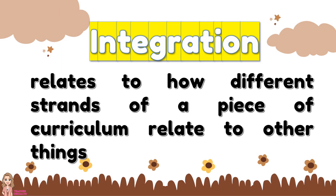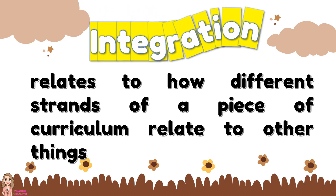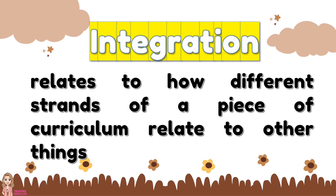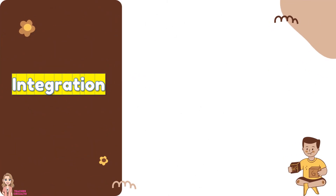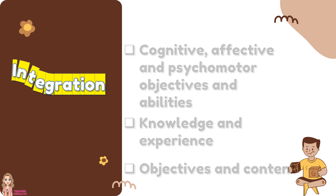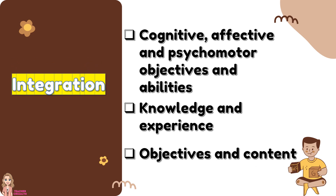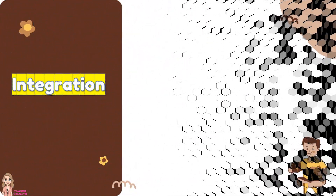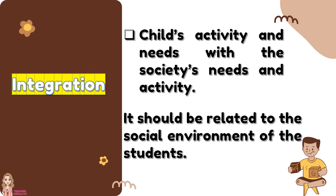Next is the integration. It relates to how different strands of a piece of curriculum relate to other things. We should integrate the following: cognitive, affective, and psychomotor objectives and abilities; the knowledge and experience; the objectives and the content; and the child's activities and needs with the society's needs and activities. It should be related to the social environment of the students.